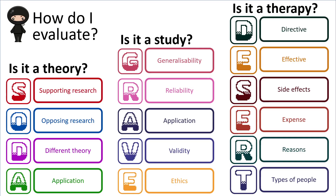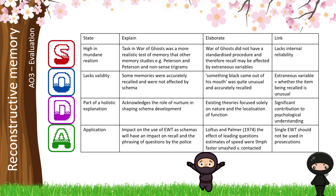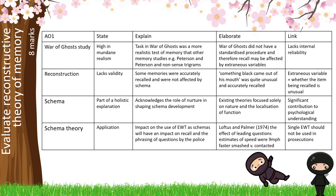To evaluate reconstructive theory, you use SODA because this is a theory. We need to create logical chains of reasoning to access the higher levels on Edexcel, so you want arguments and then developments or counter-arguments using State, Explain, Elaborate, and Link. We also want key terminology to show detailed knowledge. For an eight-marker, you piece together AO1 and AO3 into logical chains of reasoning, working along each row to construct your essay.